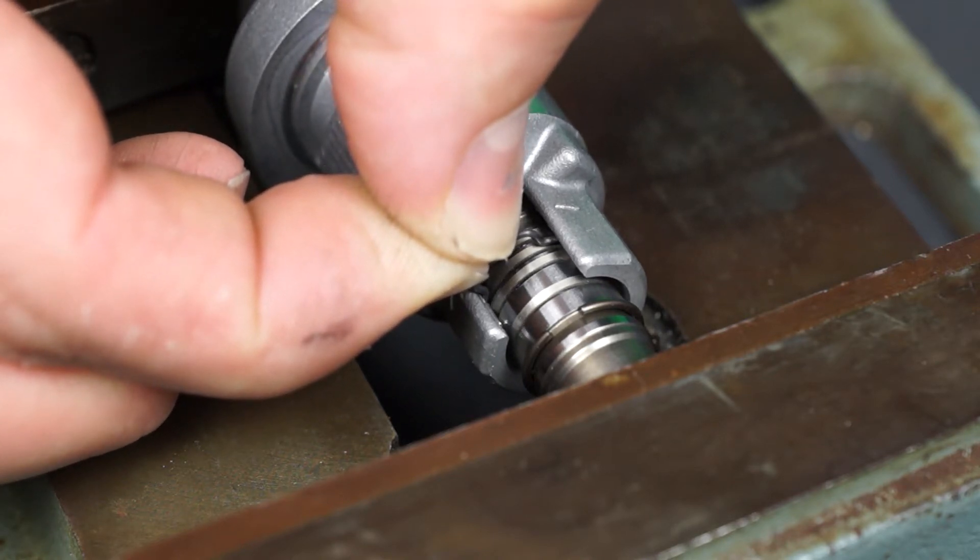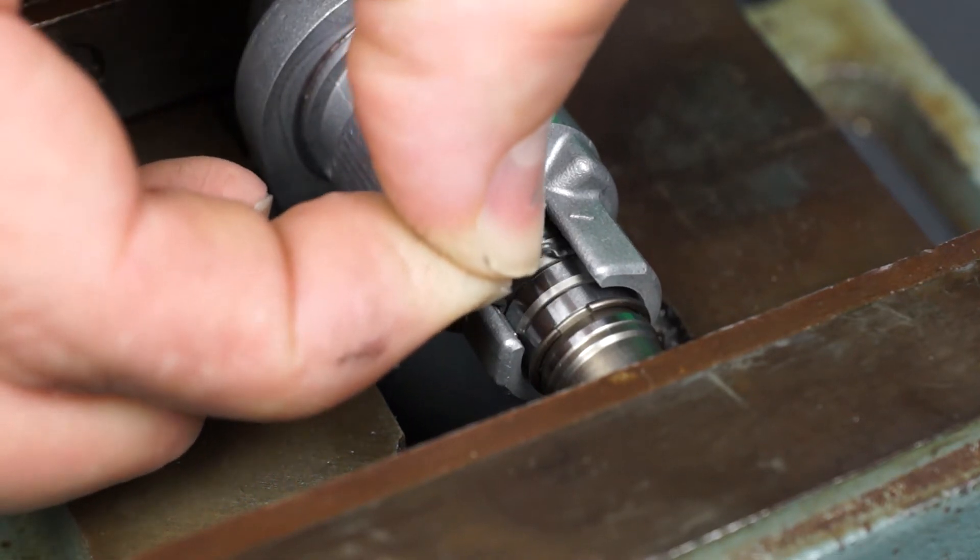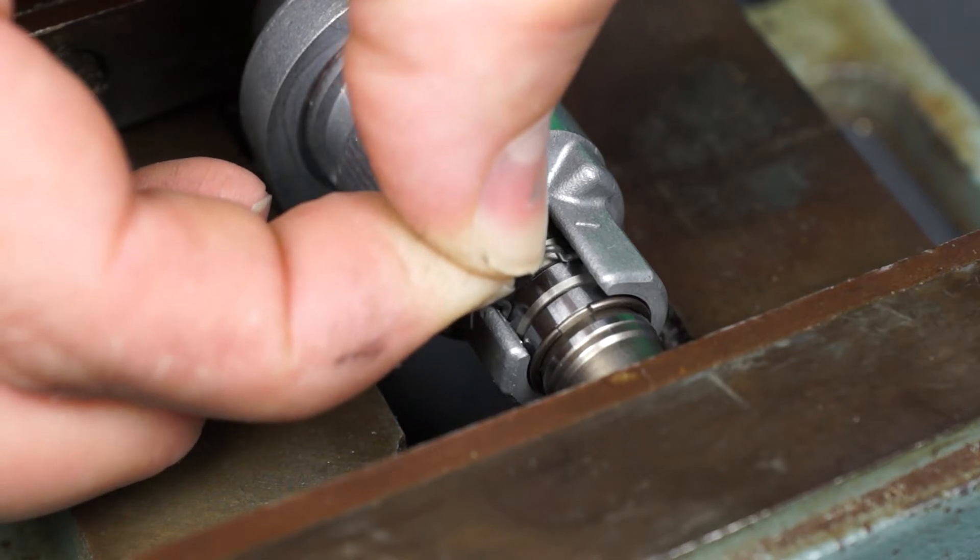If you feel the vice become tight and the rod doesn't want to compress easily, the clip has probably become wedged in the housing. Loosen the vice slightly, adjust the clip position, and resume tightening the vice.